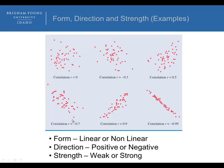When we get to a correlation of negative 0.7, the form is starting to become clearly linear, the direction is negative, and the strength is starting to get fairly strong — notice the points are getting closer to the line. At a correlation of 0.9, the form is linear, the direction is positive, and the strength is strong. The last example has a very strong negative correlation where the points are very close together, so the strength is strong and the direction is negative.